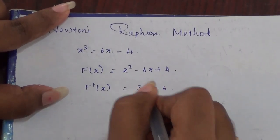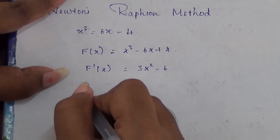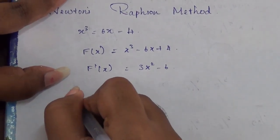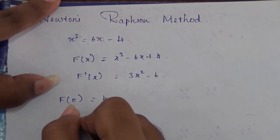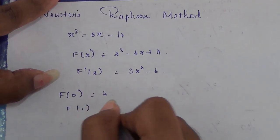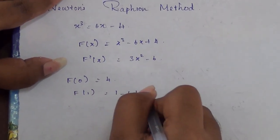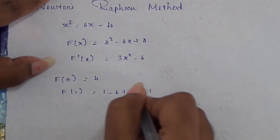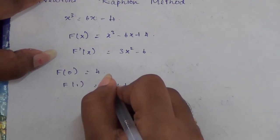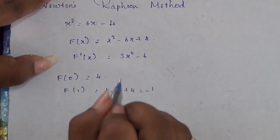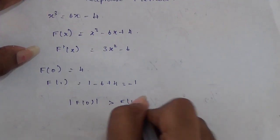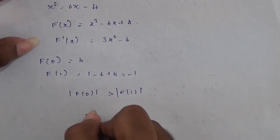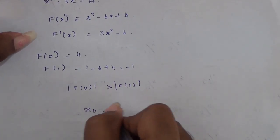Now we have to substitute values for x in the equation f(x). So when x = 0, we get f(0) = 4. And when we substitute 1, we get 1 - 6 + 4 = -1. In this case, the sign of the equation changes. So f(0) is greater than f(1). So we take the value x₀ = 1.